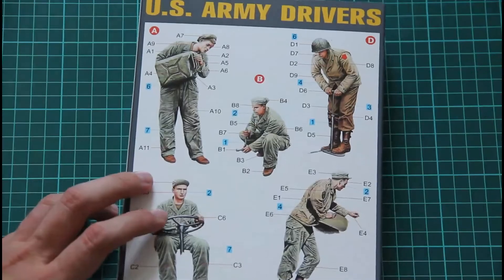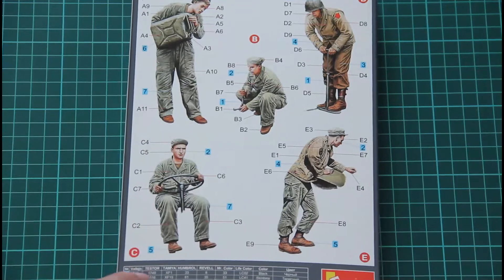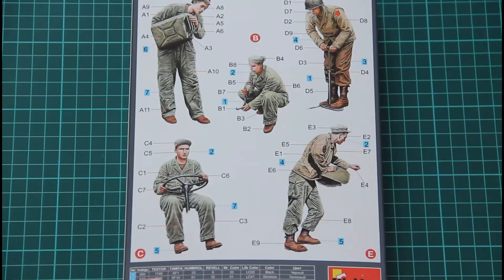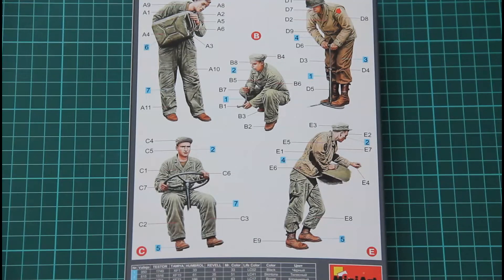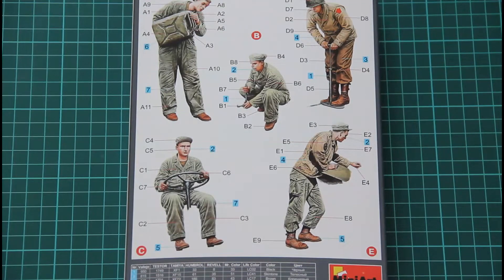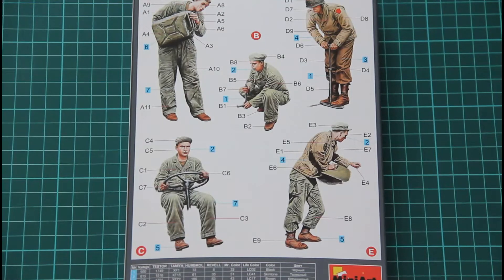As you can see, we have painting colors provided in various numbers. So we have Vallejo, Testors, Tamiya, Humbrol, Revell, even Gunze and some standard designations. So I guess it will be easy to pick up the right shade from your favorite manufacturer.